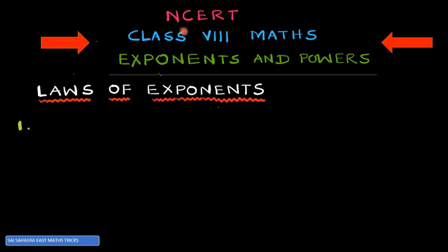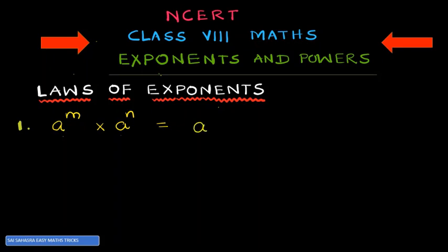In this class we are discussing Class 8 Maths — Exponents and Powers chapter. The first law of exponents: a raised to the power of m multiplied by a raised to the power of n. When the same base is there and the powers are different, we take a single base and add the exponents, that is m plus n.